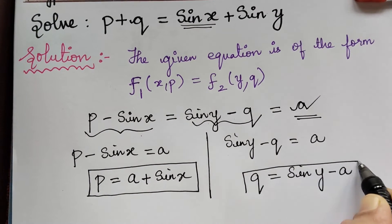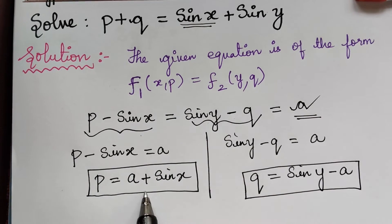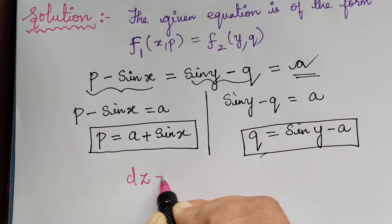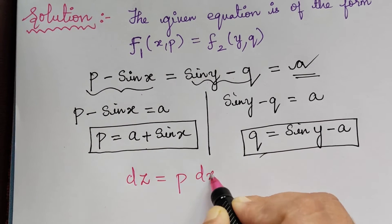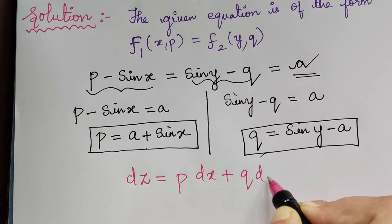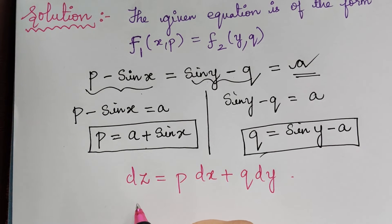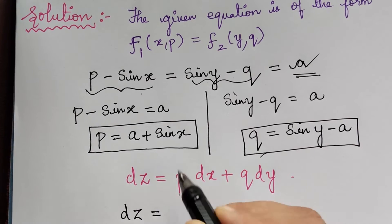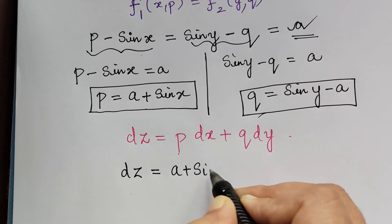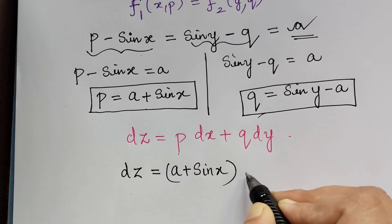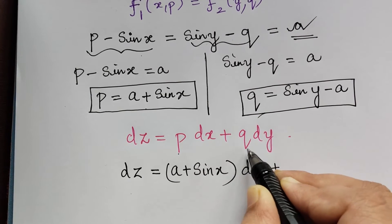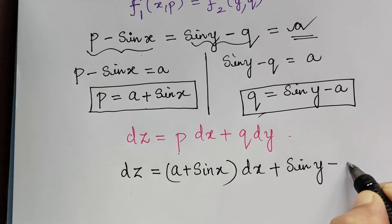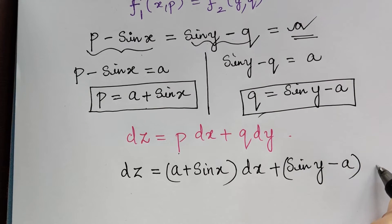Now we substitute the values of p and q into the equation dz equals p dx plus q dy. Therefore dz equals a plus sin x dx plus sin y minus a dy.